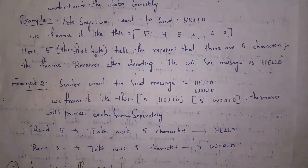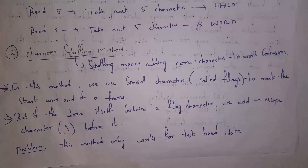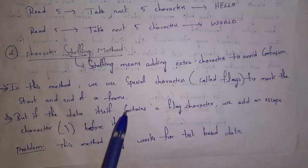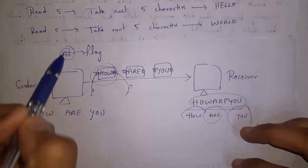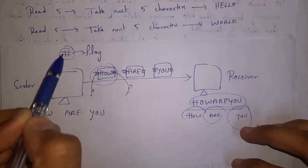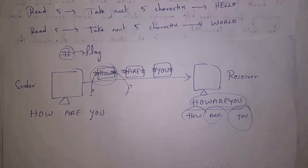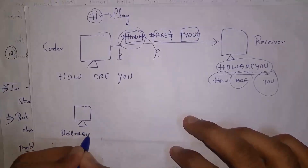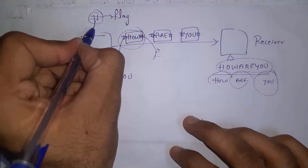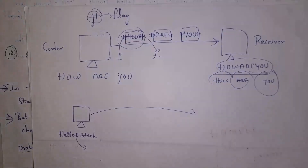Next is the Character Stuffing Method. Stuffing means adding extra characters to our data to avoid confusion. In character stuffing, we use special characters to mark the start and end of the frame — which is what the hash example demonstrated. We mark a special character at the start and at the end of the frame. Whenever the receiver receives each frame, it removes the flags and reads the actual data.